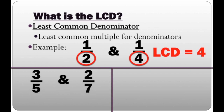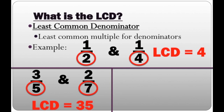How about this example? 3/5 plus 2/7. In three fifths, the denominator is 5. In two sevenths, the denominator is 7. So what's the least common multiple for 5 and 7? That would be 35. Since the least common multiple is 35, the LCD is 35.